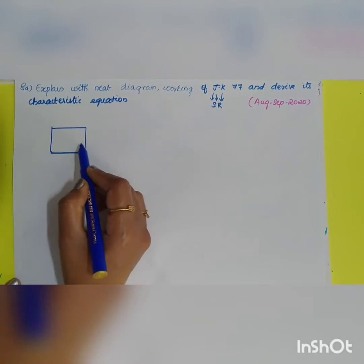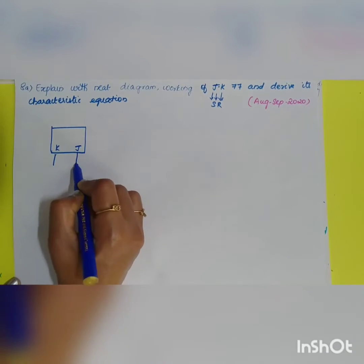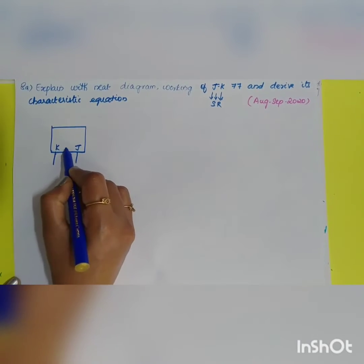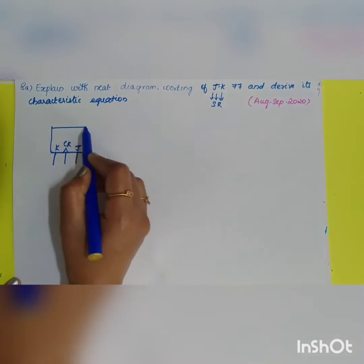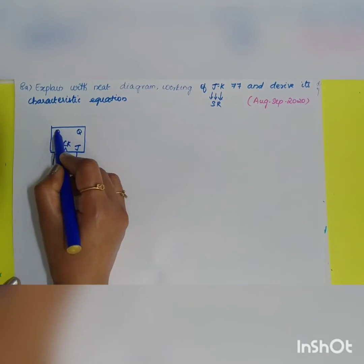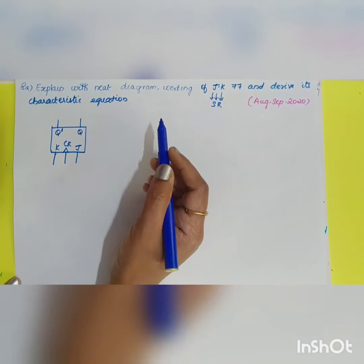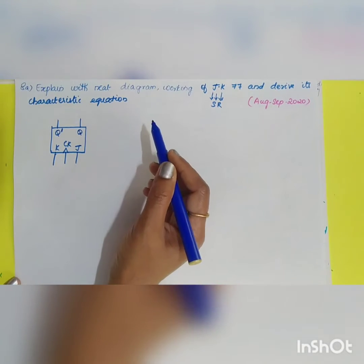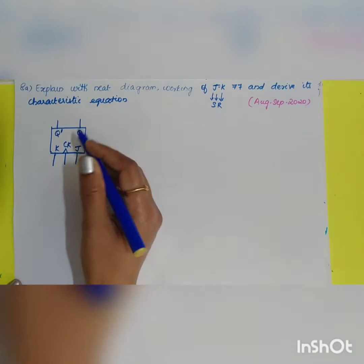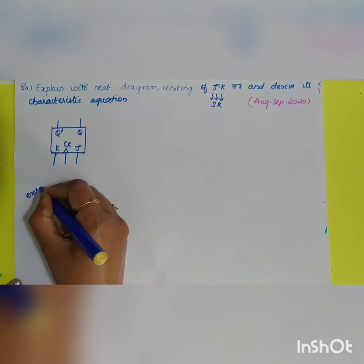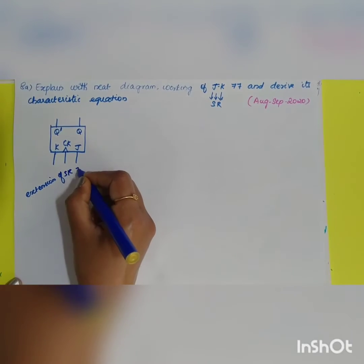The block diagram of the JK flip-flop consists of two inputs: J and K, along with a clock signal. The outputs are Q and its complement Q' (Q bar). It is essentially an extension of the SR flip-flop, where S is equivalent to J and R is equivalent to K.